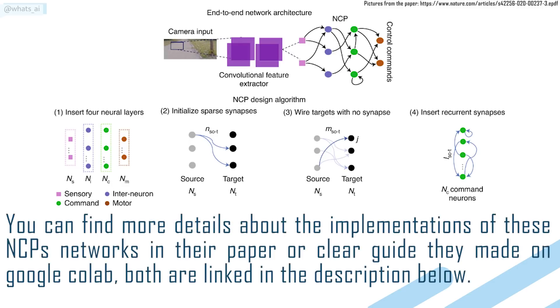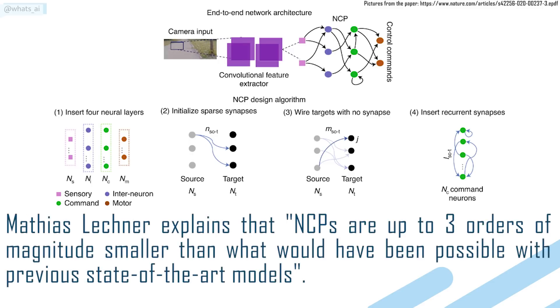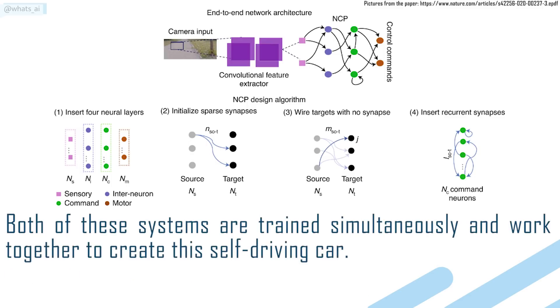You can find more details about the implementations of these NCPs networks in their paper, or clear guide they made on Google Collab. Both are linked in the description below. This is where the biggest reduction in parameters happens. Matthias Lechner explains that NCPs are up to three orders of magnitude smaller than what would have been possible with previous state-of-the-art models. Both of these systems are trained simultaneously and work together to create the self-driving car.